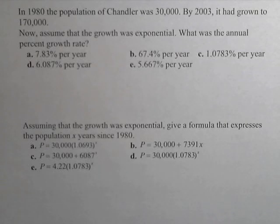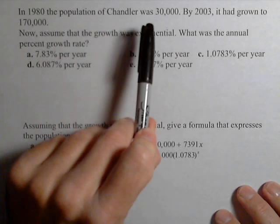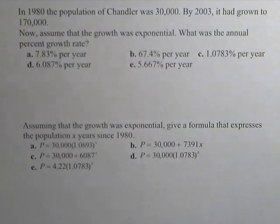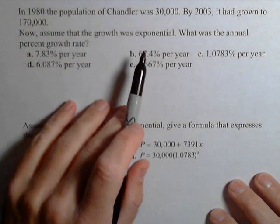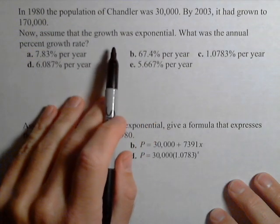Okay, in this problem we have the population of Chandler in 1980 was 30,000. In 2003 it had grown to 170,000. So the first question is, assuming the growth was exponential, what was the annual percent growth rate?